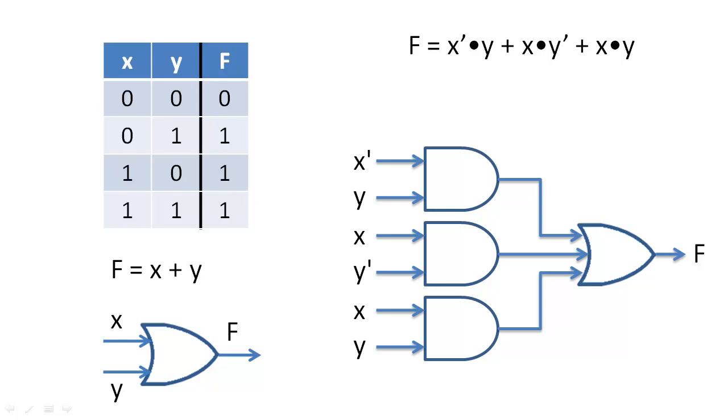The first expression has three product terms and four literals, but the second expression has only two product terms and two literals. So the obvious question is, how do we prove that these two circuits are equivalent?